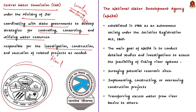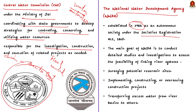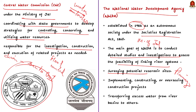The CWC is also responsible for investigating, constructing, and executing related projects and is headed by a chairman with the status of ex-officio Secretary to the Government of India. The National Water Development Agency (NWDA) was established in 1982 as an autonomous society under the Societies Registration Act 1860, functioning under the Department of Water Resource, River Development and Ganga Regeneration. Its main goal is to conduct detailed studies to assess the feasibility of linking river systems in both Peninsular and Himalayan regions as part of the National Perspective Plan for Water Resource Development.